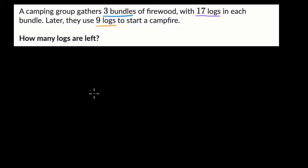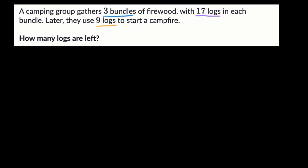Now let's work on this together. The first thing to think about is the camping group started with three bundles and each of those bundles had 17 logs. So the amount that they started off with is going to be three times 17.